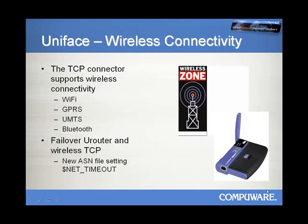Our TCP connector has been extended to connect to a remote Uniface router process via a wireless network. Currently, Uniface supports the following types of wireless connectivity: Wi-Fi, GPRS, UMTS, and Bluetooth. As you have probably already experienced when using wireless networks, they can be unreliable sometimes due to range and interference. Should the connection be broken, users can lose data — and we do not want this to happen with Uniface applications. Hence, Uniface wireless network support ensures data recovery if the connection to the network is lost.